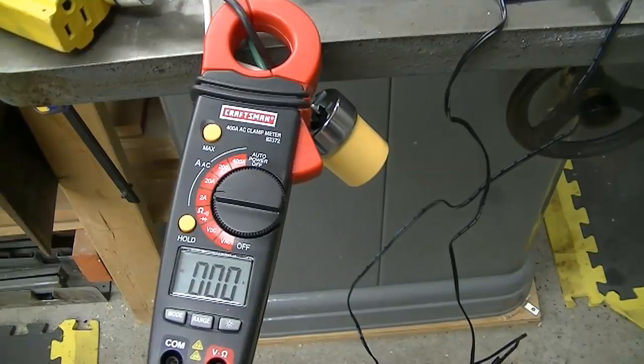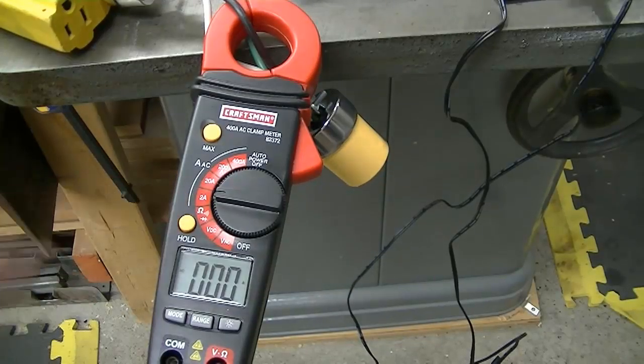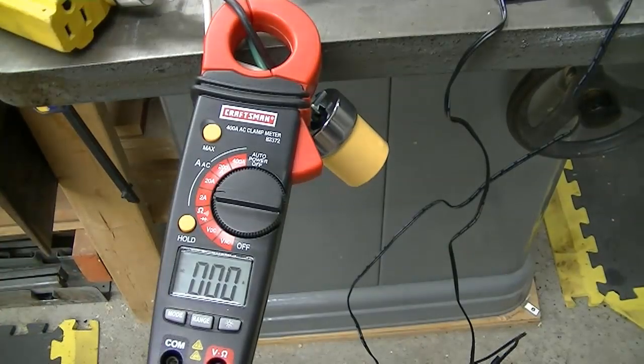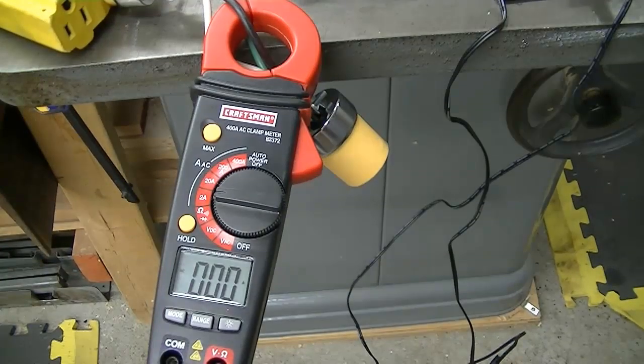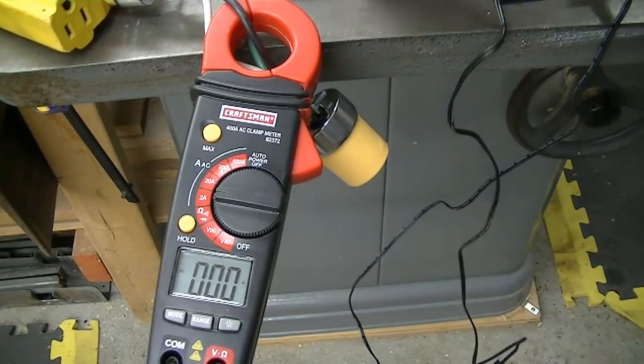I've got my inductive clamp meter on the amp settings. It's on the 2 amp setting. So to measure anything up to 2 amps, you can read up to the thousands place on the display.